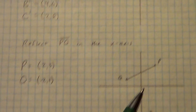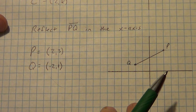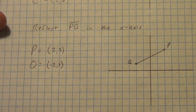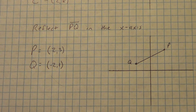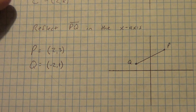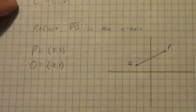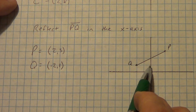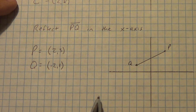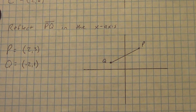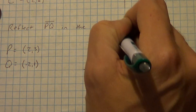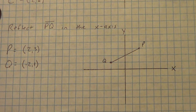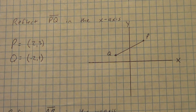Okay, next example. We're going to reflect PQ in the x-axis. Pause the video, copy this down. You've got P at (2, 3) and Q at (negative 2, 1). Make sure you remember this is the x-axis and this is the y-axis — I get some kids who get that backwards, which means you're going to get things wrong.